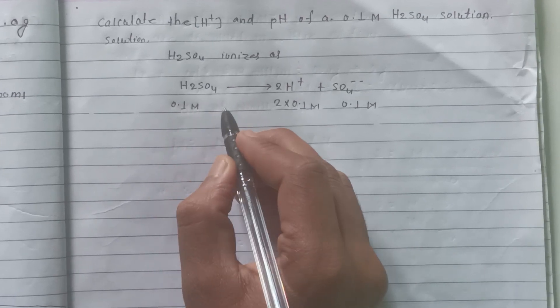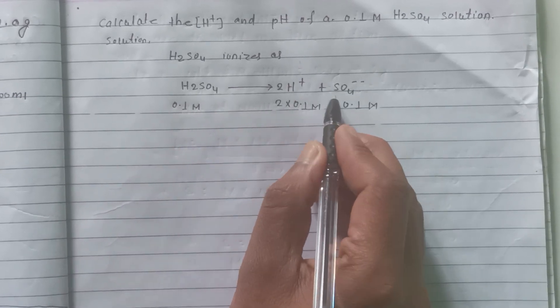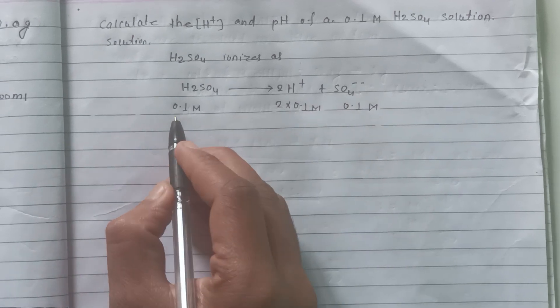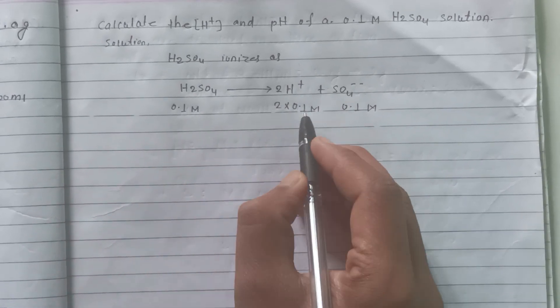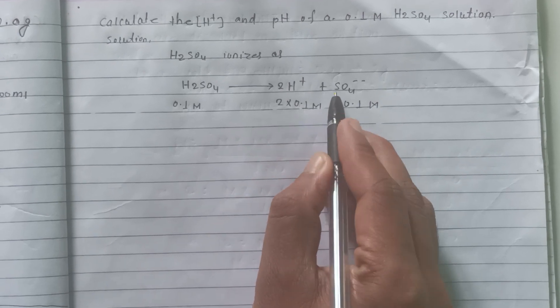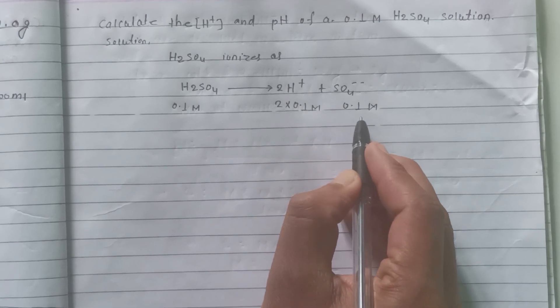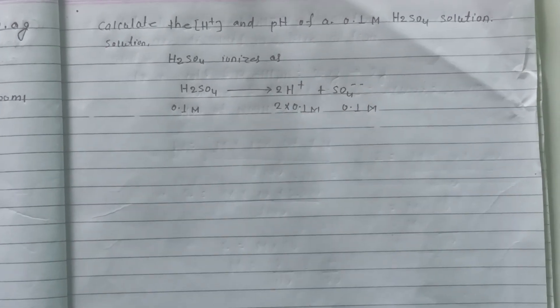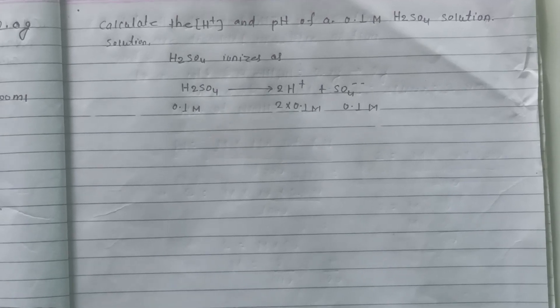SO4 completely ionized. So this is 0.1M. That's 0.1M. So this will get 0.1M.